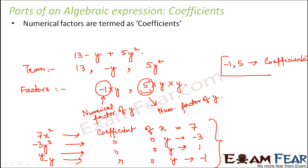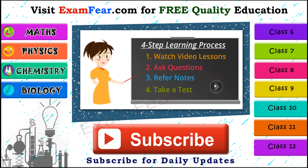With this, I think we got an idea about the different parts of an algebraic expression. An expression has terms, an expression has factors, and for the numerical factors especially, there is a special term called coefficients. Thank you.